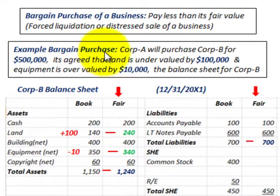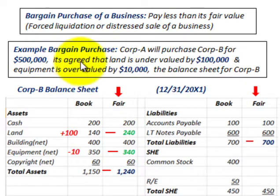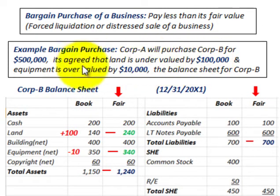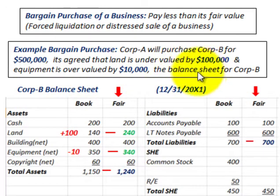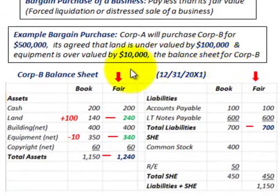Our example here for this bargain purchase is where Corporation A will purchase Corporation B for $500,000. Both Corp A and Corp B agree that the land being purchased is undervalued by $100,000 and the equipment is overvalued by $10,000. Corporation A is buying what's on the balance sheet of Corporation B.